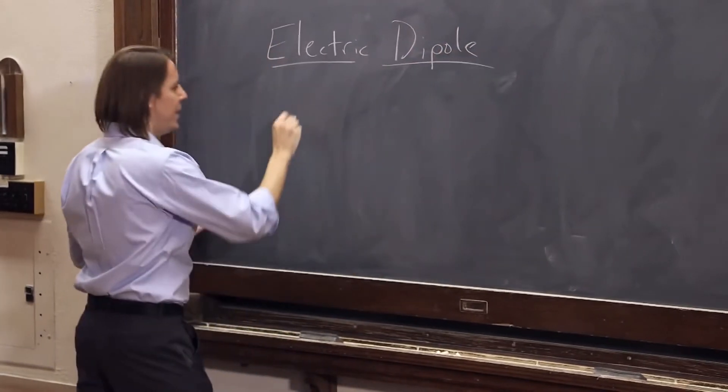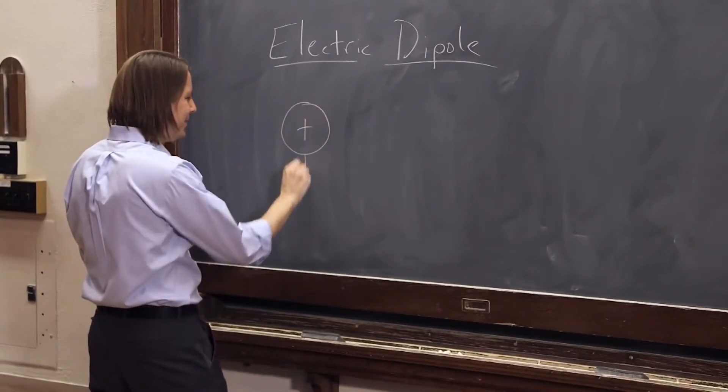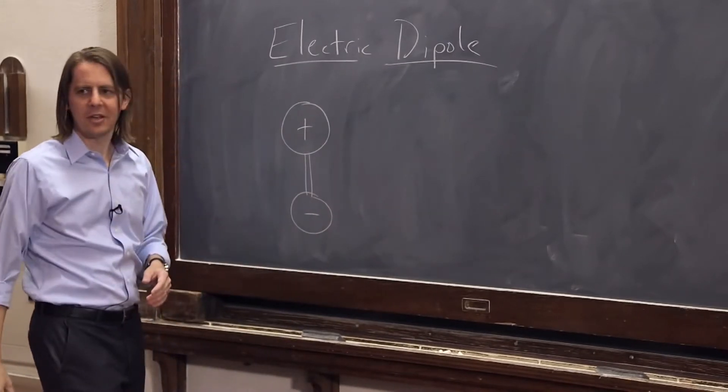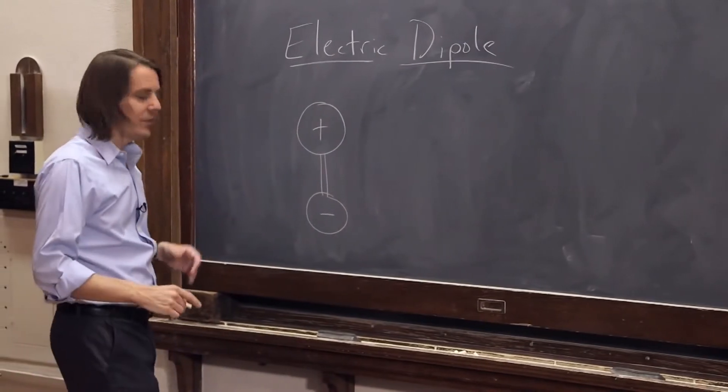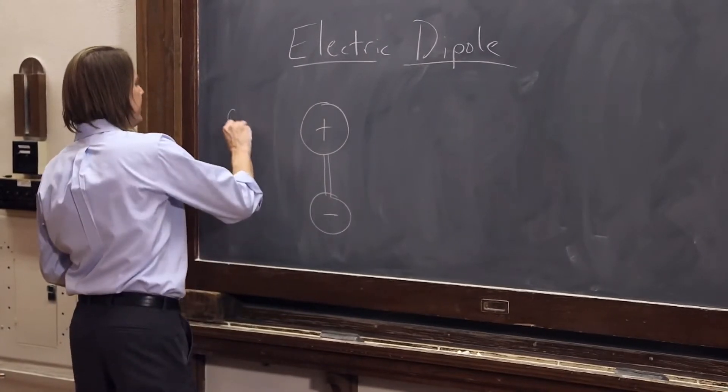So if we have a charge here, a positive charge, and we connect it to some negative charge with a little stick, an imaginary stick that keeps them separated, that's a dipole. It has two poles, a positive pole and a negative pole. And let's imagine this one is fixed.